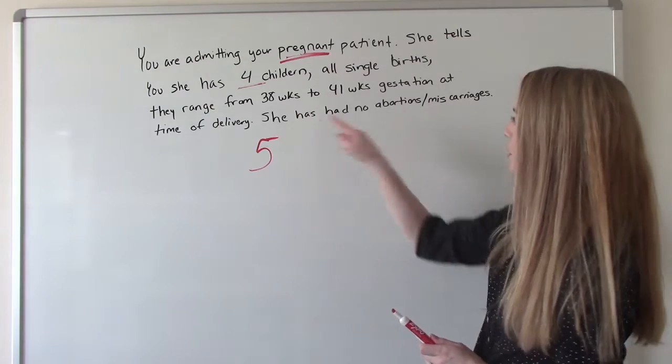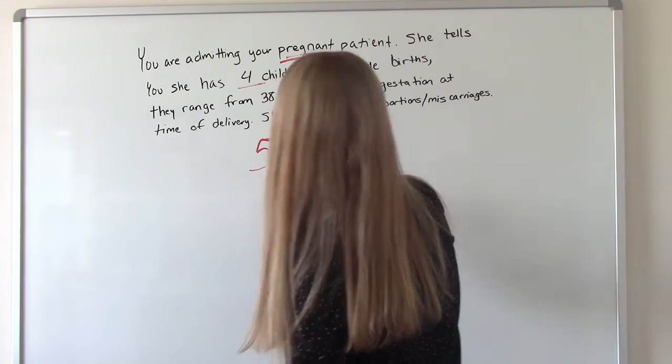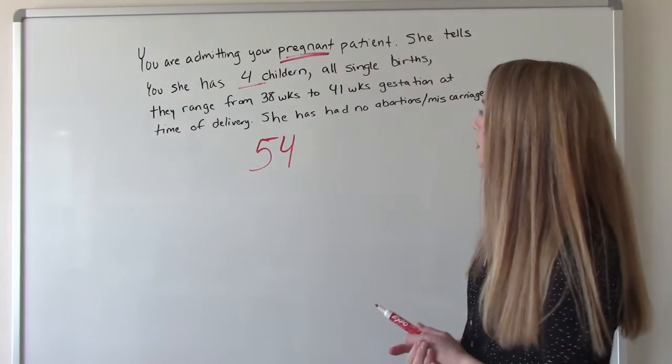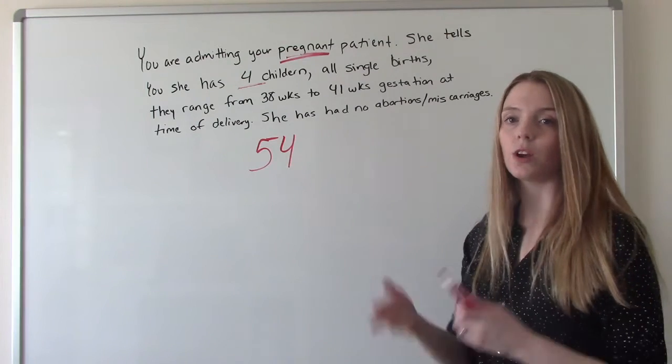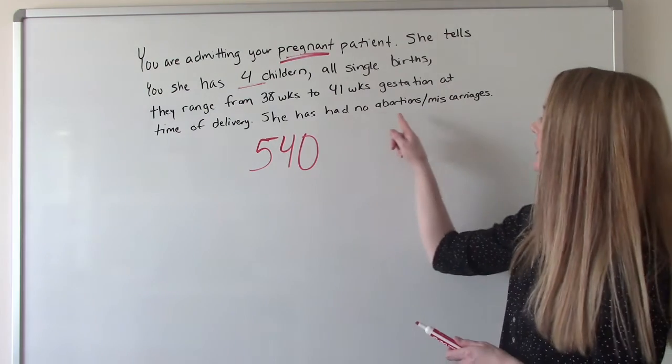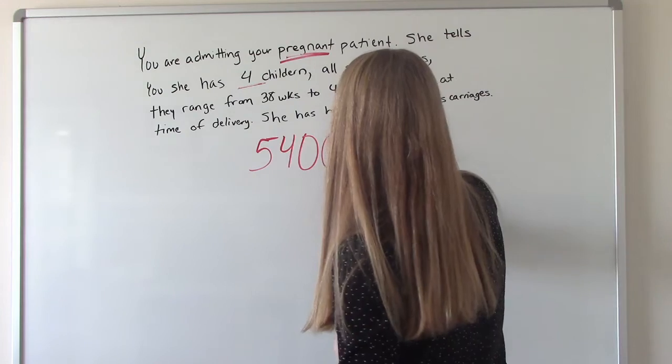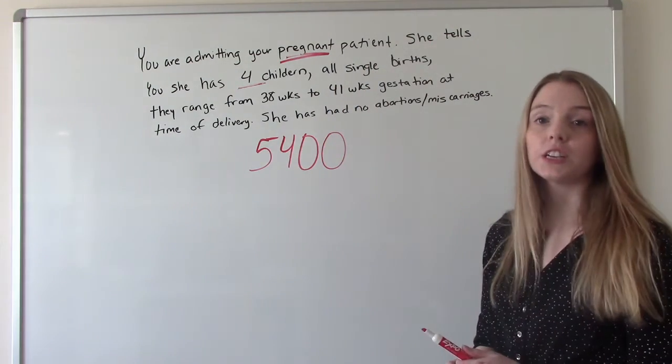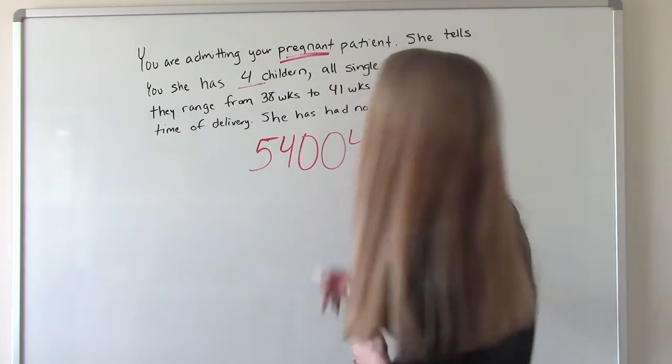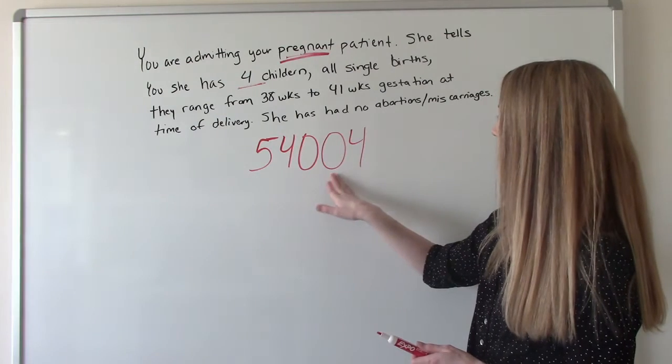How many term pregnancies has she had? Well, it looks like all of them, right? If they range from 38 to 41 weeks, so four. And she doesn't say anything about any babies under 38 weeks, so no preterms. She specifically tells you she's had no abortions or miscarriages, so no losses. So that's zero again. And then she has four living children. So her GTPAL is five, four, zero, zero, four.